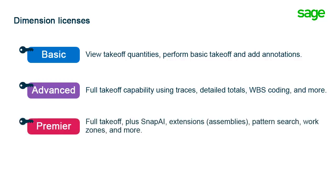The Premier edition gives you all of the features in the Advanced license, as well as Snap AI, a takeoff feature that automatically identifies points, line segments, and polylines to really speed up your takeoff process. Premier also gives you the ability to create extensions, run pattern searches, separate drawings into zones, and other features.